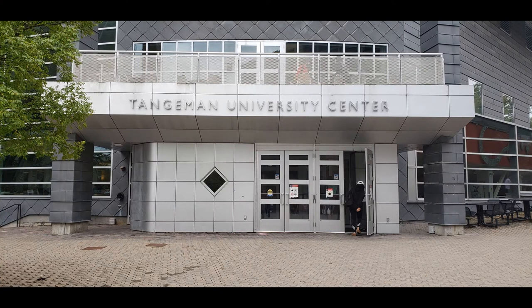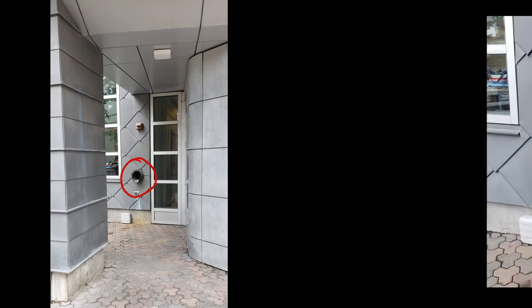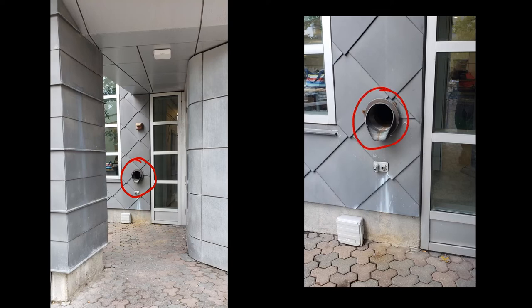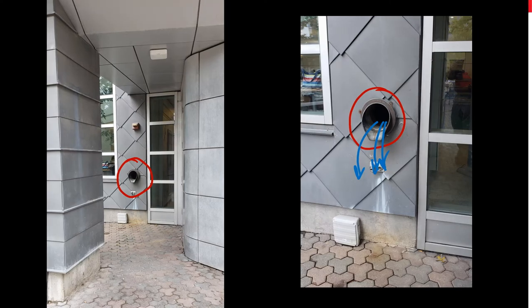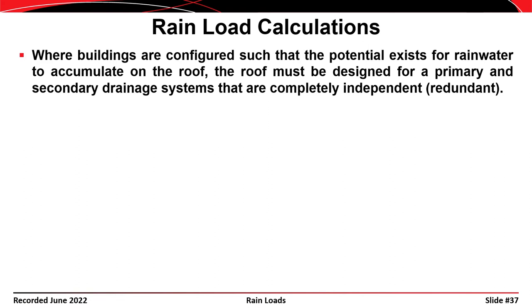The Tangeman University Center on the University of Cincinnati campus has an outflow to the left of the main entrance that is actually a discharge for rainwater collected by drains on the roof level. During a rainstorm you should see water pouring out of that outflow, whether it is serving as a primary drain or as a secondary drain when the primary is clogged.